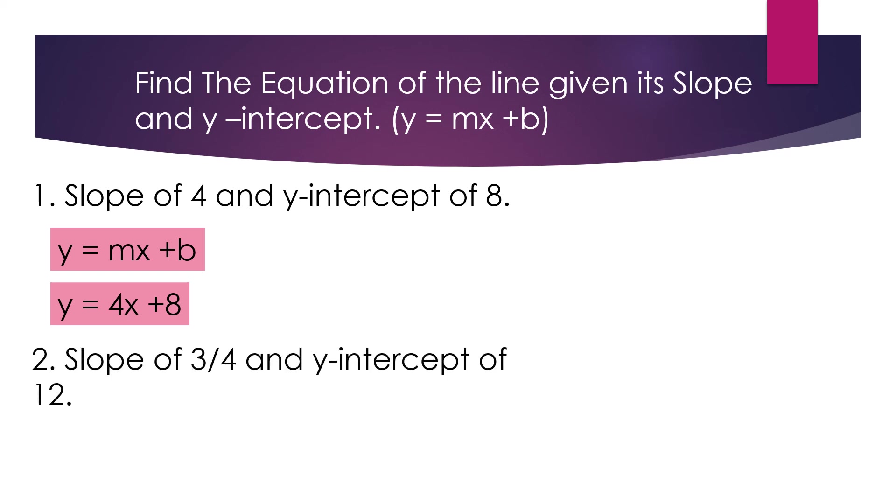And okay, another one. Slope of 3/4 and y-intercept of 12. So, y is equal to 3/4. That's the slope times x. And, what is now the y-intercept? 12. So, that is plus 12. So, that's it. That's how you're going to find the equation of the line given the slope and the y-intercept.